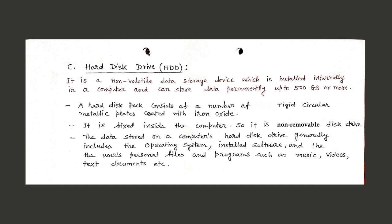Hard Disk Drive or HDD is a non-volatile data storage device installed internally in a computer that can store data permanently, up to 500 GB or more. A hard disk pack consists of a number of rigid circular metallic plates coated with iron oxide. It is fixed inside the computer, making it a non-removable disk drive. Data stored on an HDD generally includes the operating system, installed software, and the user's personal files such as music, videos, text documents, etc.